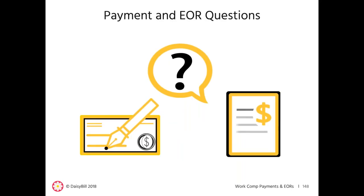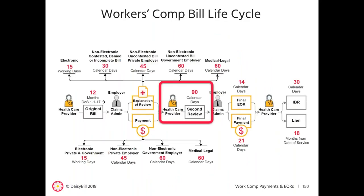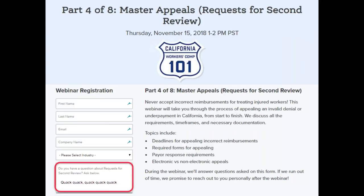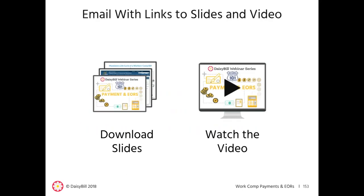This is the end of the scripted webinar. Before we turn to your questions, a few announcements. The next webinar in our Workers' Comp 101 series is about Second Review Appeals, on Thursday, November 15th. A request for second review is the mandatory first step in the appeal process for an improperly denied or incorrectly paid bill. After today's webinar, a survey will appear in your browser window — please take 30 seconds to answer the four quick questions. Later this week, you'll receive an email with links to watch a video recording of this webinar and download the slides.